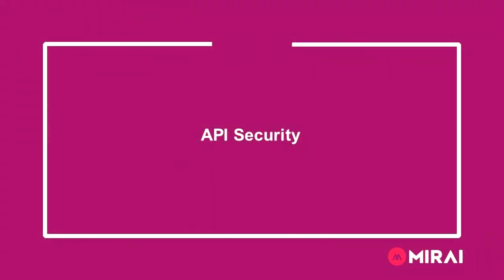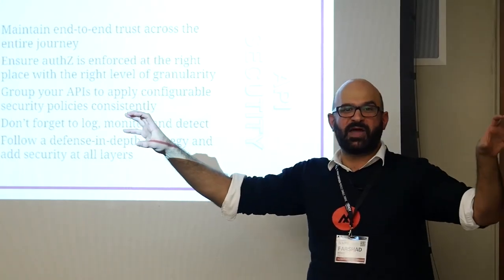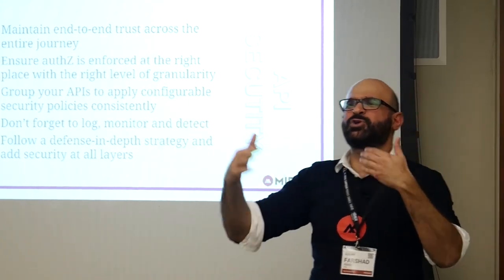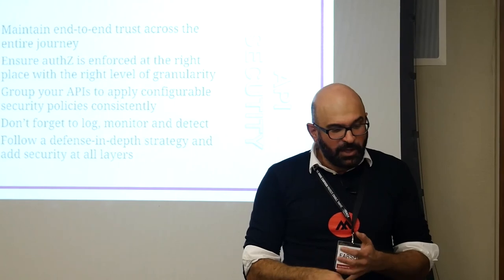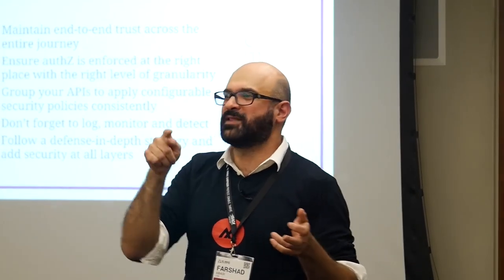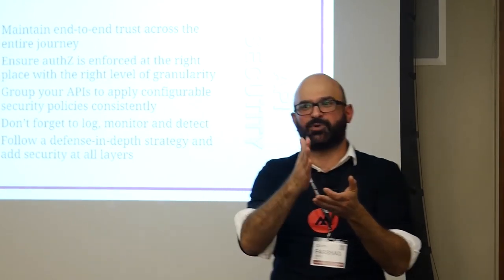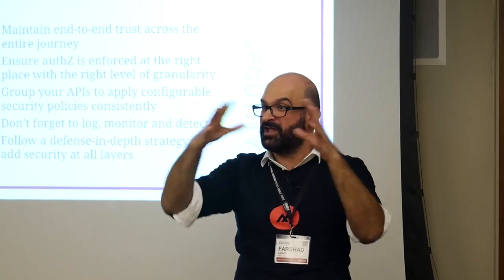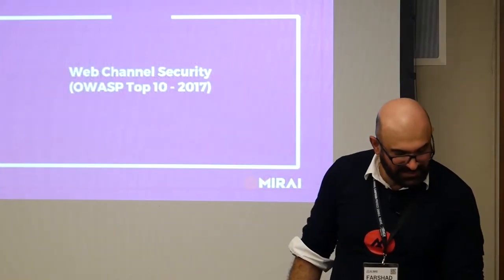For API security, maintain end-to-end trust across the entire journey — your application is no longer one bundle but broken into APIs and microservices, so you need a trust mechanism like signed tokens designed throughout the application. Make sure authorization is enforced at the right place with the right level of granularity. Group your APIs to apply configurable security policies consistently via an API gateway — just like you don't apply policies per user but create groups and apply policies at the group level, do the same with APIs. Enforce policies to a group of APIs at the gateway. Don't forget to log, monitor, and detect, and follow a defense in depth approach applying security at all layers.